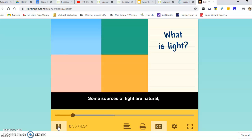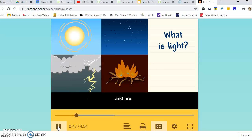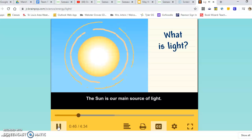Some sources of light are natural, like the sun, other stars, lightning, and fire. The sun is our main source of light.